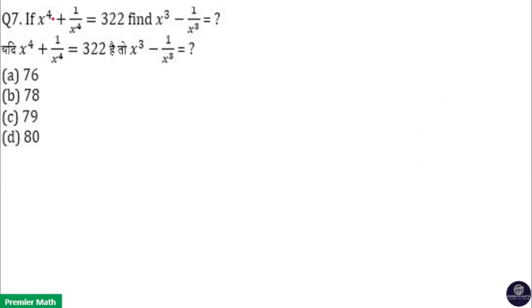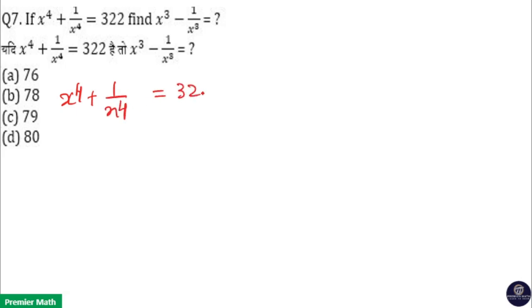If x raised to 4 plus 1 by x raised to 4 is 322, find x cubed minus 1 by x cubed. Here, x raised to 4 plus 1 by x raised to 4 is 322.